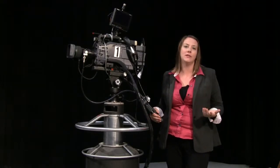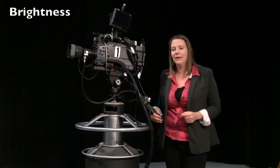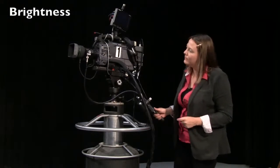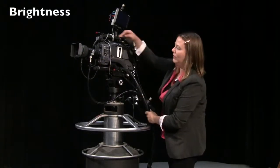Lastly, you want to make sure you understand how to control the brightness, which is controlled with the iris ring, and also how to white balance. So here on our lenses, you can see there's actually three rings on our lens.